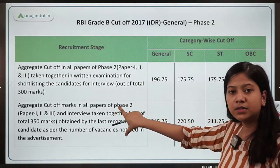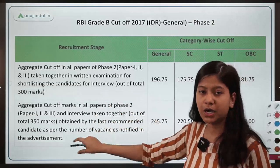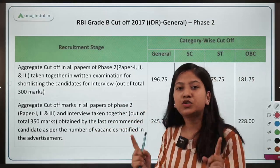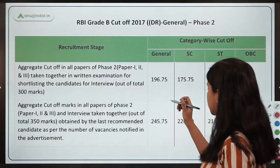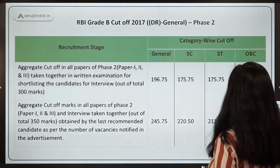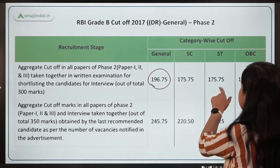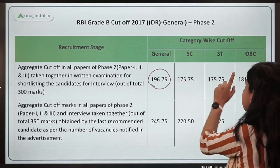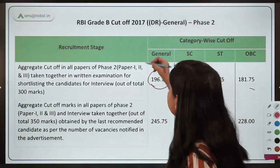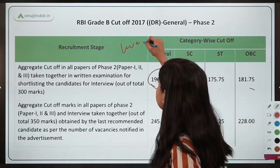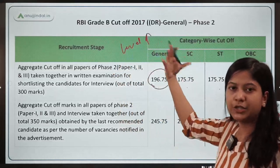I am focusing on the Phase 2 written examination cutoff, not the final cutoff which includes interview marks. In 2017, the cutoff was 196.75 for General category, 175 for SC/ST, and 181 for OBC. The level of examination was difficult this year, yet the cutoff was still quite high.